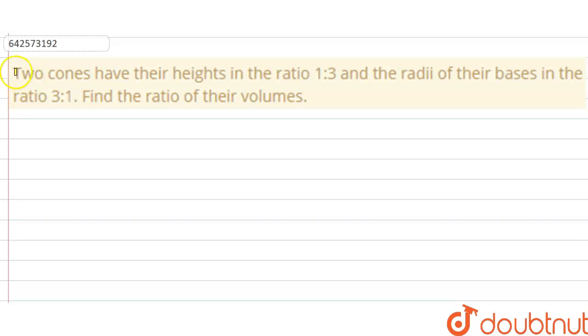Hello everyone, in this question, two cones have their height in the ratio 1:3 and the radii of their base in the ratio 3:1. Find the ratios of their volume.